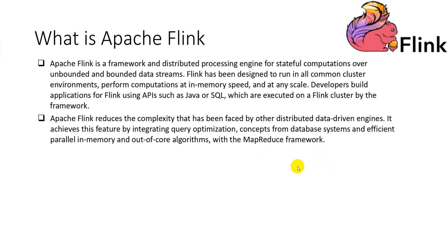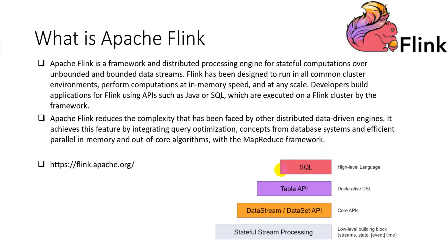Flink offers layered APIs that offer different levels of expressiveness and control, designed to target different types of use cases. There are three layers of the API: the Process Function, also known as the Stateful Stream Processing API; the DataStream API; and the Table and SQL API.